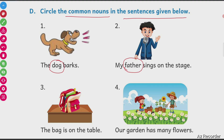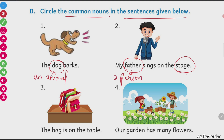Stage is also a common name for a place. The third sentence: The bag is on the table. What are the common names in this? Bag is a thing. Table is also a thing. So both are things — common names for a thing.